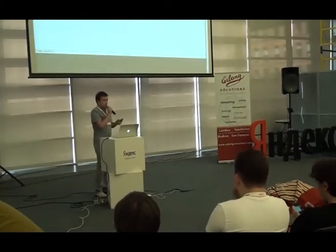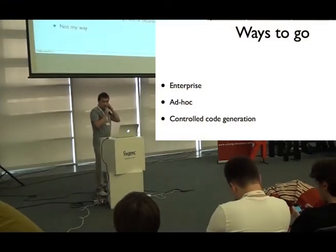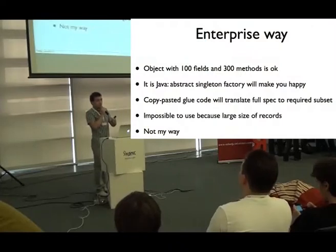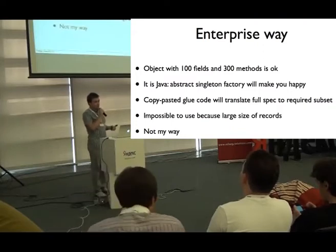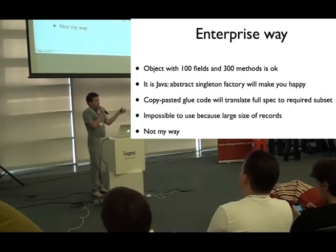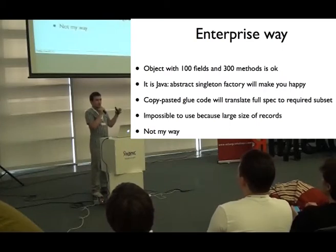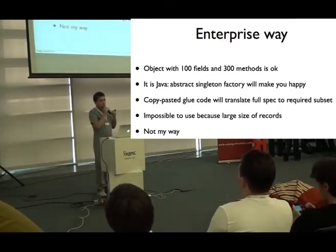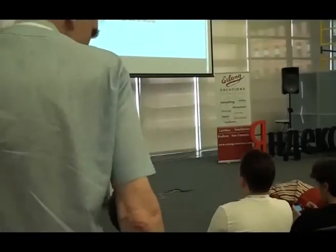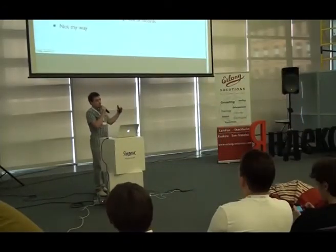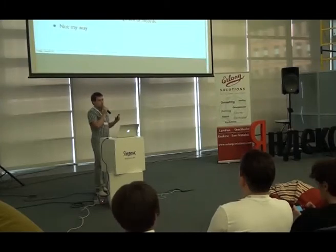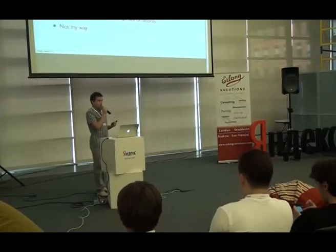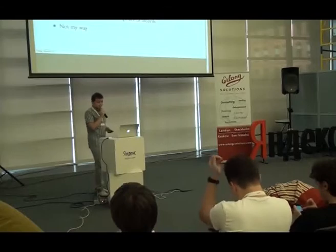The first way is the enterprise way — Java guys like this. It means you take this XML, create objects with hundreds of fields with a big amount of methods, then create some abstract singleton factories that create your objects out of FIX objects, and create large copy-pasted glue code to translate FIX business level to your business level. It is impossible to use in Erlang because it's very inconvenient and because of the large size of records — you get records with more than 100 fields. So it was not my way.